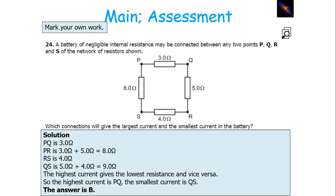Work out what each resistance is for the current paths. Path P to Q is just a 3 ohm resistor. P to R is the 3 and 5 ohm resistors in series, equalling 8 ohms. R to S is just a 4 ohm resistor. Q to S is the 5 and 4 ohm resistors in series, giving 9 ohms. The highest current gives the lowest resistance and vice versa, so the highest current is PQ at 3 ohms, and the smallest current is QS at 9 ohms.